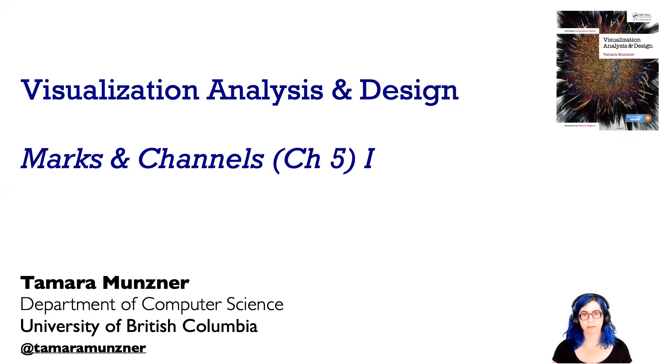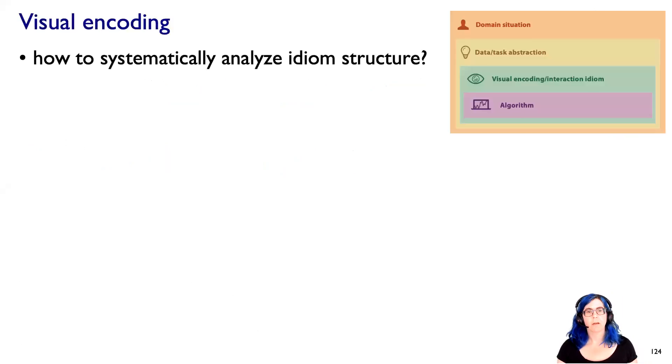Continuing with visualization, analysis, and design, let's start talking about marks and channels. We have this idea of a four-level model: domain, abstraction, idiom, and algorithm. Let's think at the idiom level - how would we systematically analyze the structure of visualization idioms for encoding and interaction, particularly for visual encoding right now?